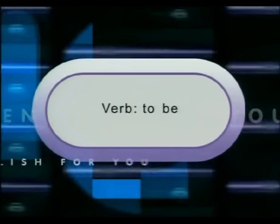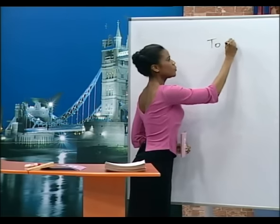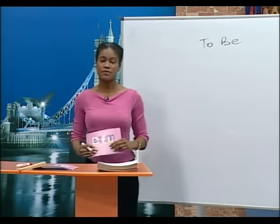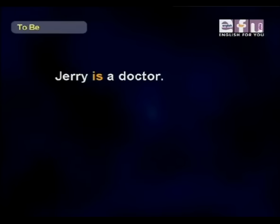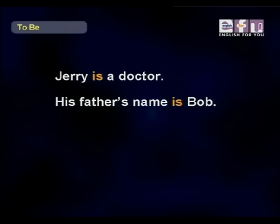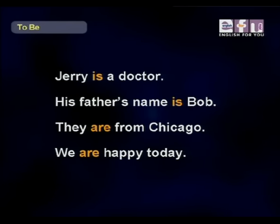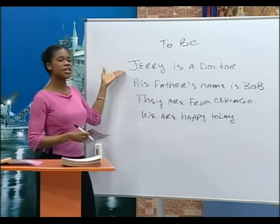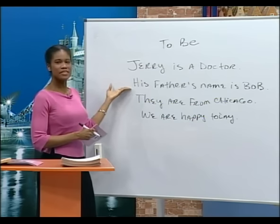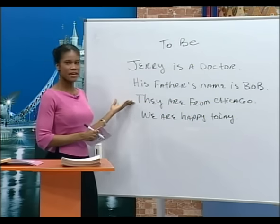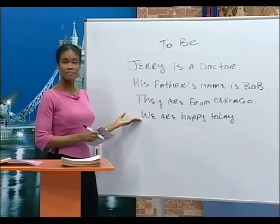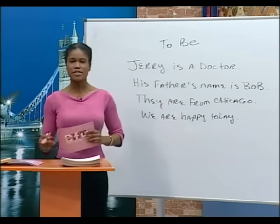Verb to be. Let's begin our lesson with a review of the verb 'to be'. We use the verb 'to be' in sentences that give information. For example, we can say: Jerry is a doctor. His father's name is Bob. Jerry and his father, they are from Chicago. We are happy today. Look at the chart we learned in Level 1.